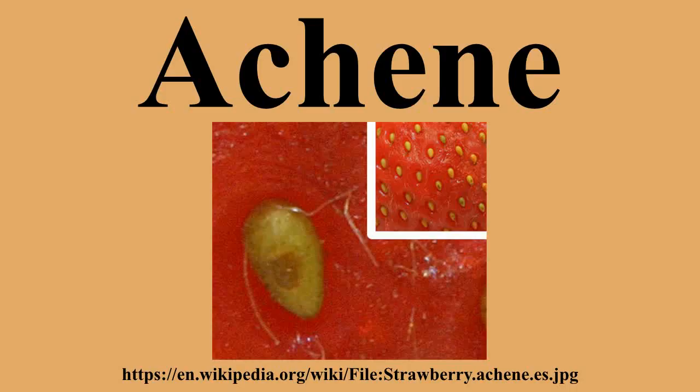The fruit of the family Asteraceae is also so similar to an achene that it is often considered to be one, although it derives from a compound inferior ovary. A special term for the Asteraceae fruit is cypsela. For example, the white-gray husks of a sunflower seed are the walls of the cypsela fruit. Many cypselas have calyx tissue attached that functions in biological dispersal of the seed.